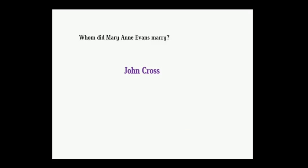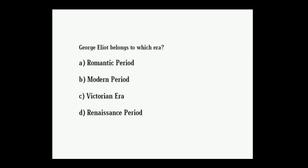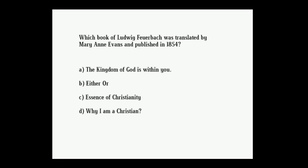Next question: whom did Mary Ann Evans marry? Options: George Lewes, John Cross, John Chapman, John Stuart Mill. Correct answer: John Cross. Next question: George Eliot belongs to which era? Options: Romantic period, Modern period, Victorian era, Renaissance period. Correct answer: Victorian era.